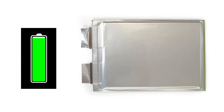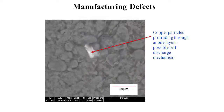On their own, lithium-ion cells may typically lose about one half to one percent of their charge per month. Some amount of self-discharge is a normal attribute, resulting from chemical reactions taking place within the cell. However, additional, undesired self-discharge can result from other factors related to cell design and manufacturing processes.